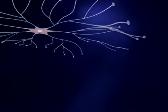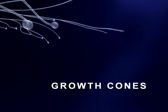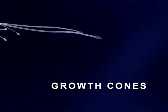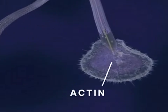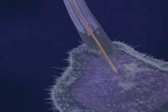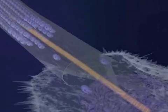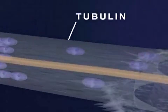At the end of each neurite is a growth cone where structural proteins are assembled to form the cell membrane. Two principal proteins involved in growth cone function are actin, which is responsible for the pulsating motion seen here, and tubulin, a major structural component of the neurite membrane.